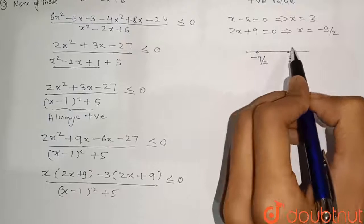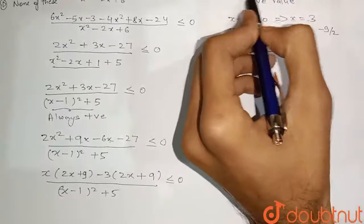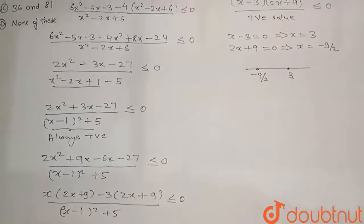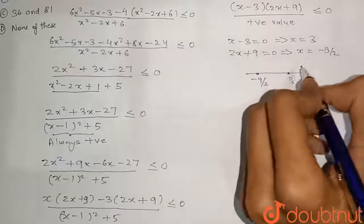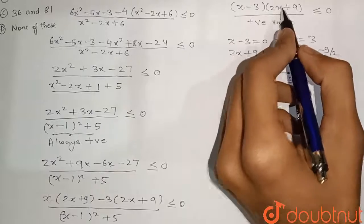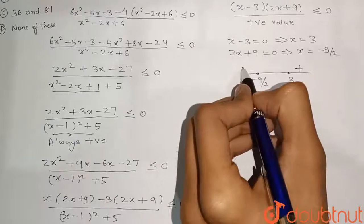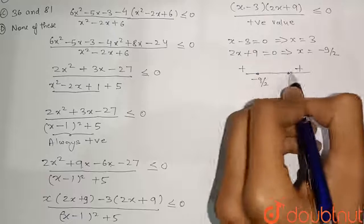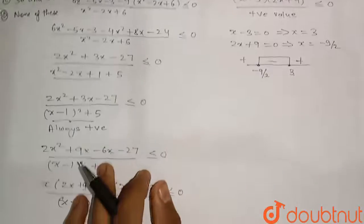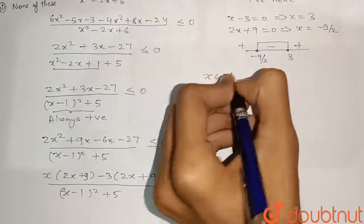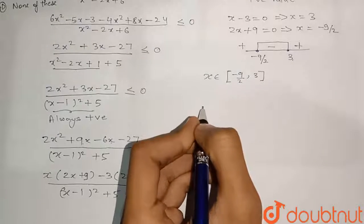Between the two critical points the expression is negative or equal to zero. So the solution is x ∈ [-9/2, 3], a closed interval. The function equals zero at the endpoints x = -9/2 and x = 3, which are both included. Now we need to find the maximum and minimum value of 4x² for x in this interval.